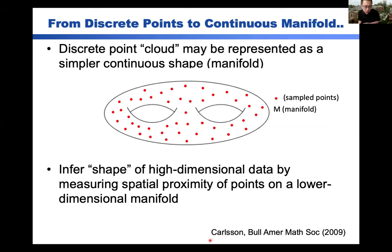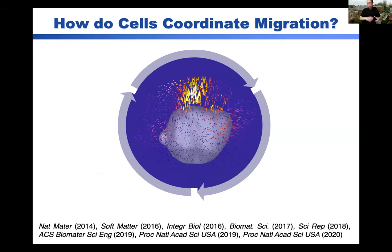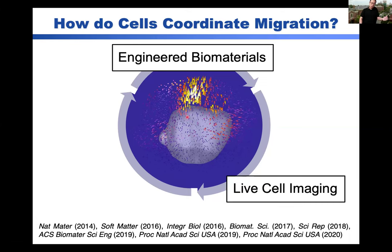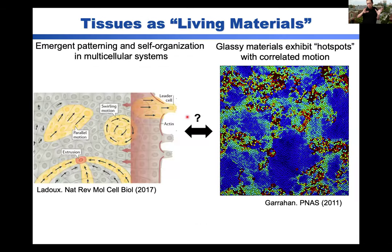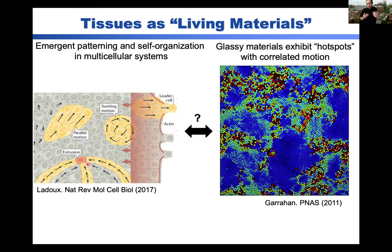That's the topology side. Our lab is very interested in the central question of how epithelial cells coordinate migration. We typically use some combination of engineered biomaterials, live cell imaging, and computer vision to understand how this all works. One idea that fascinates me is that tissues look a lot like soft, active, or living materials. If you look at a monolayer of epithelial cells, you see coordinated motions: leader cells guiding followers into empty space, swirling motions, coordinated streams, and cells even ejected out of the plane. These dynamics of emergent pattern and self-organization look a lot like a soft glassy material, with brightly colored hotspots where each particle moves in a coordinated way with nearest neighbors, and dynamic heterogeneity over many length scales in space and time.